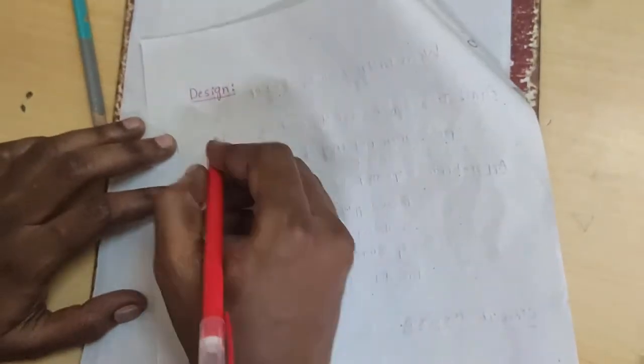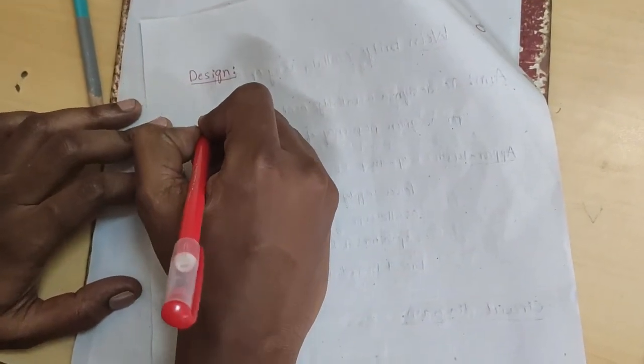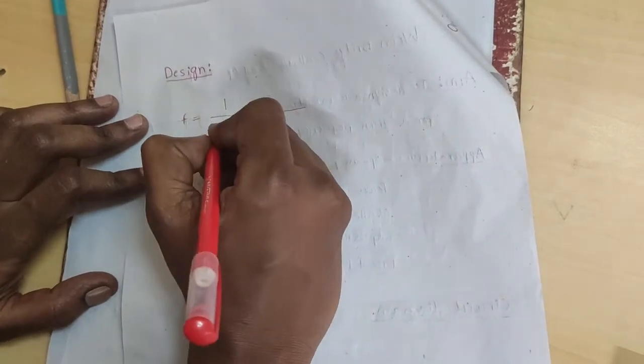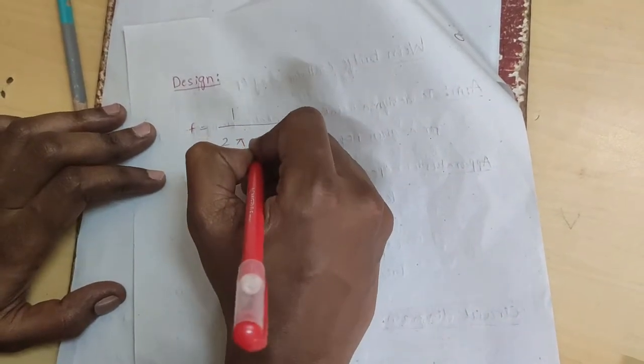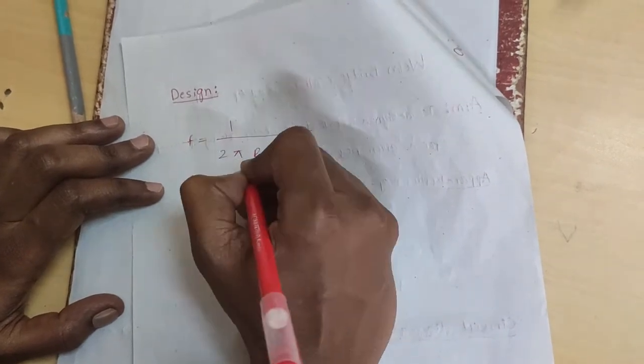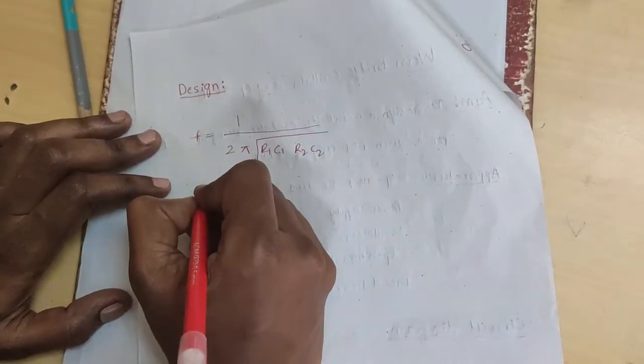Coming to the designing, frequency f equal to 1 by 2 pi R1 C1 R2 C2 under root.